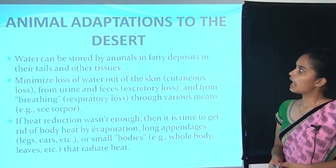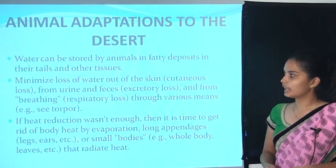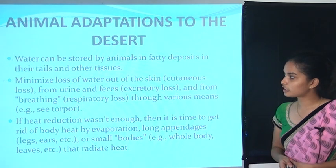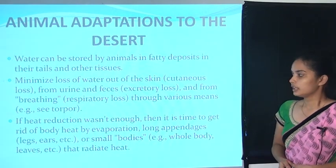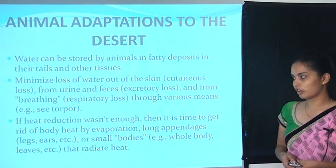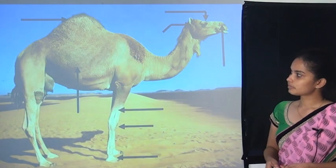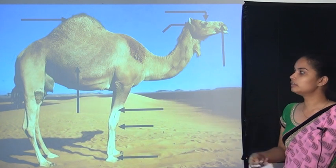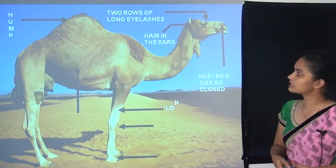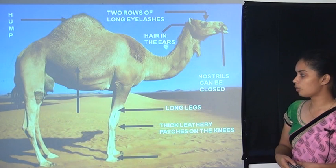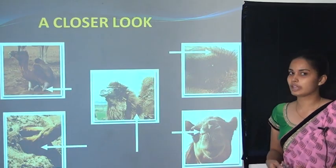Desert adaptation — animal adaptation to the desert. Water can be stored by animals in fatty deposits in their tail and other tissue. They minimize loss of water through skin, urine, and breathing through various means. The camel is the best example of a desert animal, with adaptations such as a hump, two rows of long eyelashes, hair in ears, closable nostrils, long legs, thick leathery patches, broad flat leathery pads, and wool or fur.